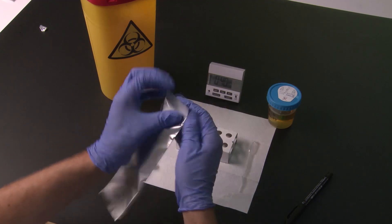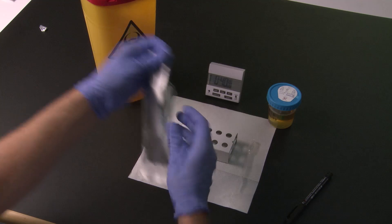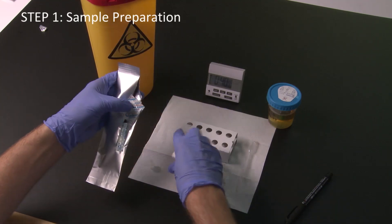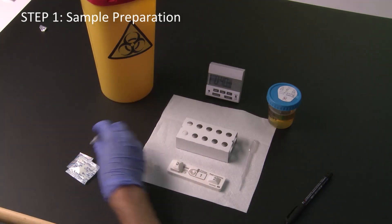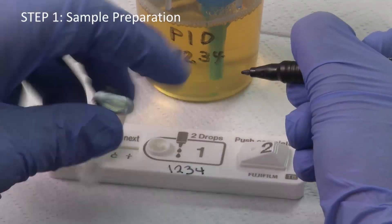The test can be performed within less than an hour and includes the following five simple steps. Open the pouch that contains the test device and the reagent tube. Write the patient's identifier on the test device and the reagent tube.